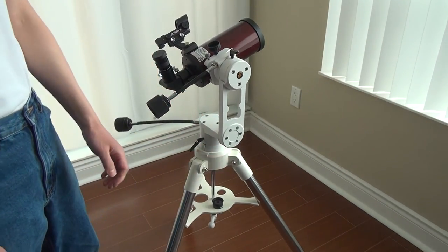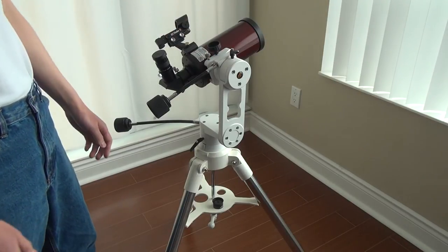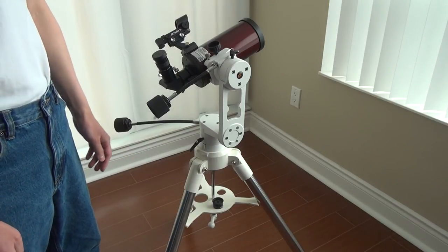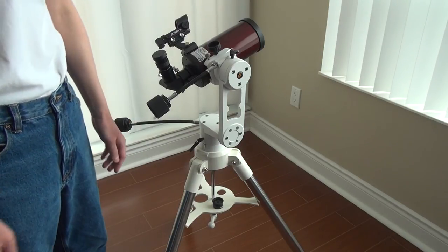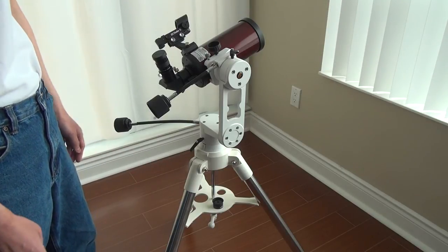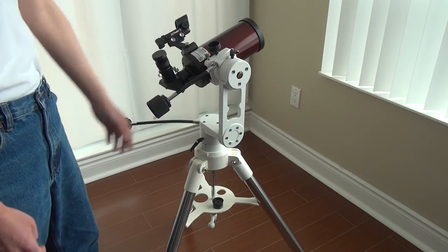This mount is the exact same as the Orion Versigo 3. It just depends which you prefer, if you can get one or the other at a cheaper price. It's the exact same mount. The only difference is the Orion gives you a one year warranty, while Explore Scientific, as long as you register within 60 days, gives a lifetime warranty.